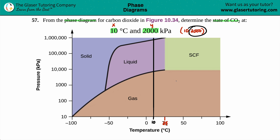Now let's go over to 2,000 on the y-axis. Here I have 10,000 and 1,000, so it's pretty evenly split. 2,000 would be a little bit up from 1,000. Maybe right here — 2,000.